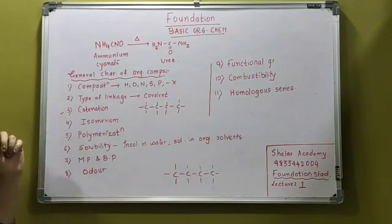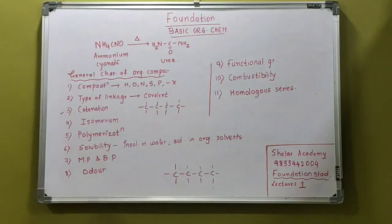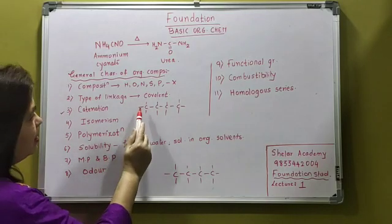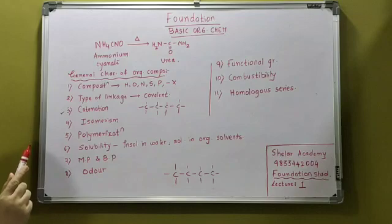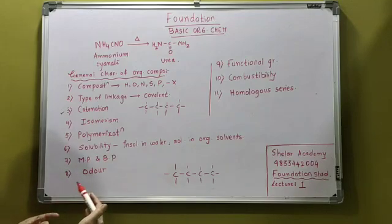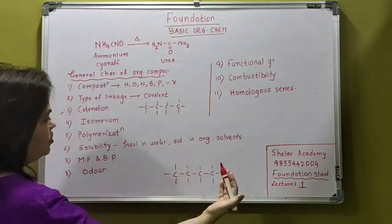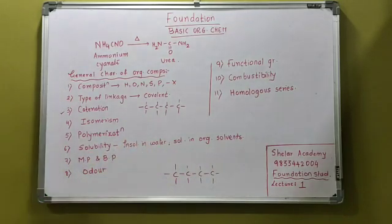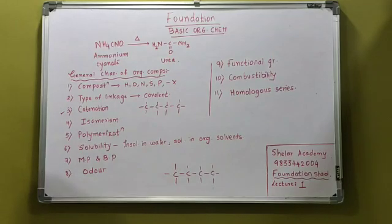Next. We have seen what do we mean by catenation. Catenation matlab, what did I tell you? It's a property of carbon to form a direct bond with the atoms of the same element to form the long chain. What is called as? It is called as catenation. So, did you understand up to this? Okay, fine. Let us continue further.